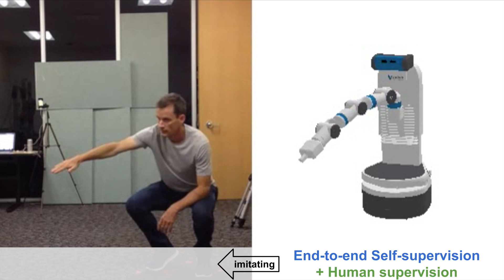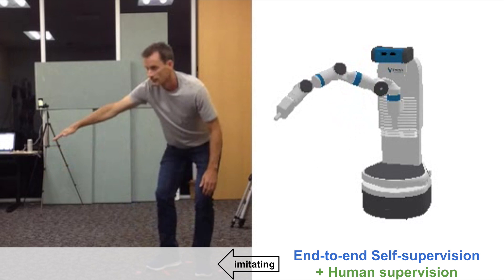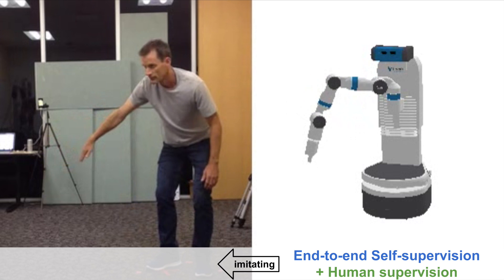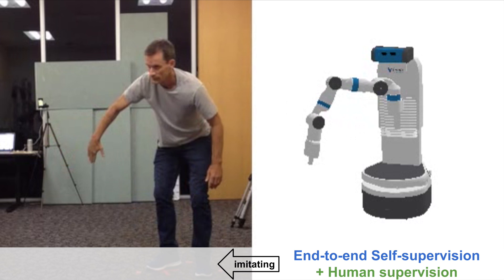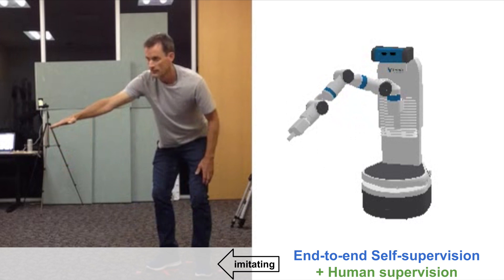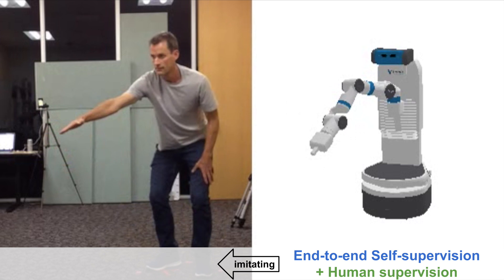Besides understanding object interactions, we can use TCNs for self-supervised pose imitation by a robot. We show that without any explicit human pose labels, the robot can learn to map observed human poses to its own corresponding joint angles.